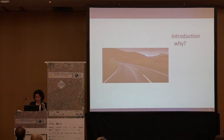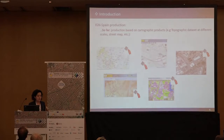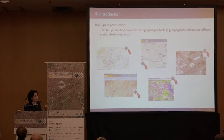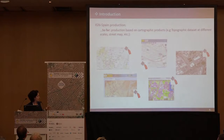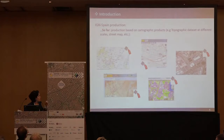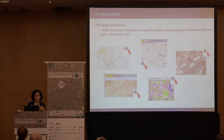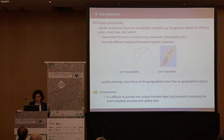Why have we decided to do it? So far, the IGN Spain production has been based on cartography products because by law we have to provide topographic information at different scales. We also have a street map and products at different scales, but all of them share some topics — normally reference information like transport and hydrography — but everyone has their own spatial and temporal update schedule.